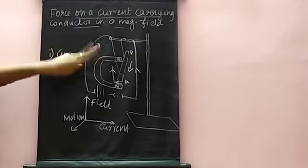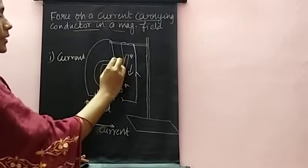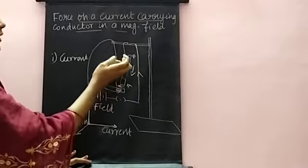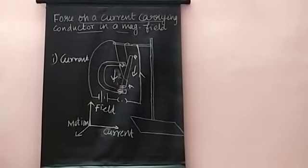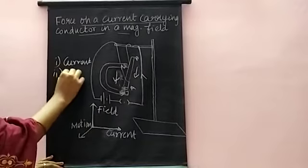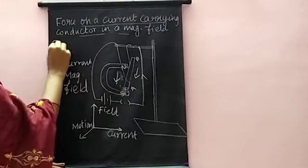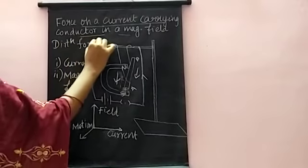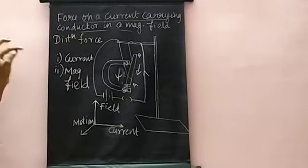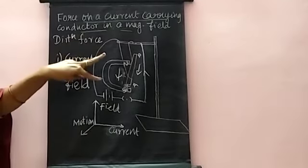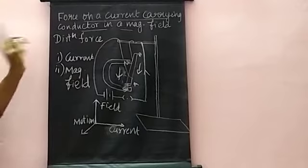In the second case, we interchange the poles of the magnet. When we interchange the poles, the south pole is where the north was and the north is where the south was. We have interchanged the magnetic field, so the direction of the magnetic field is also reversed, and therefore the direction of the magnetic force is also reversed. If the direction of the magnetic field changes, the direction of force also reverses.